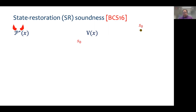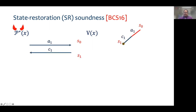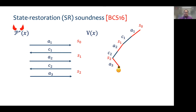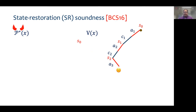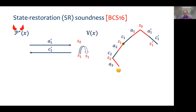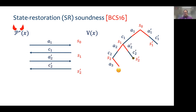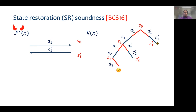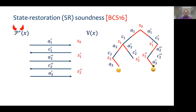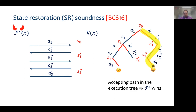The verifier starts in its initial state. The cheating prover interacts with the verifier, sending a message, receiving a challenge, and continues execution, which eventually leads to rejection. The cheating prover then restores the initial state of the verifier and starts with a new first message, receives a new first challenge, which it does not like, and restores the verifier to an earlier state. The cheating prover continues, restoring the verifier's state whenever it does not like a challenge, and that finally leads to an accept. The cheating prover wins if there is an accepting path in the execution tree.